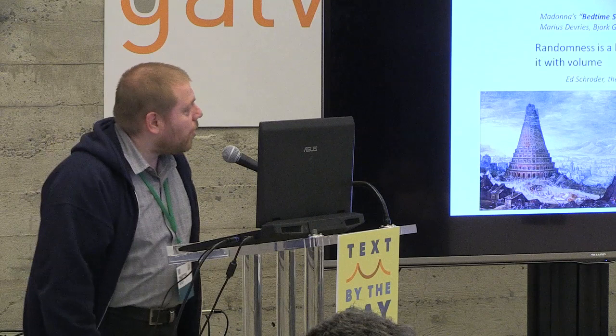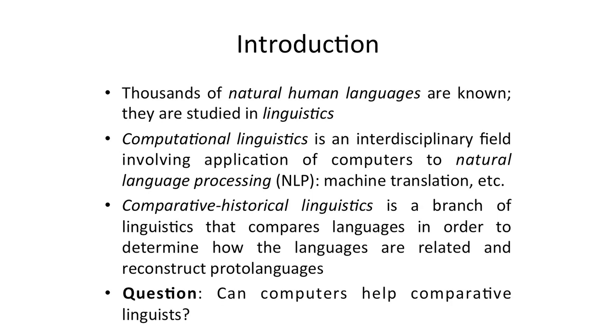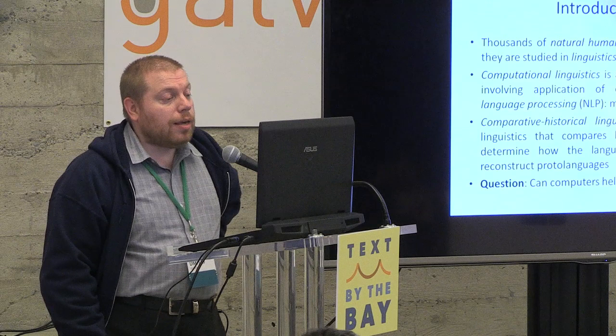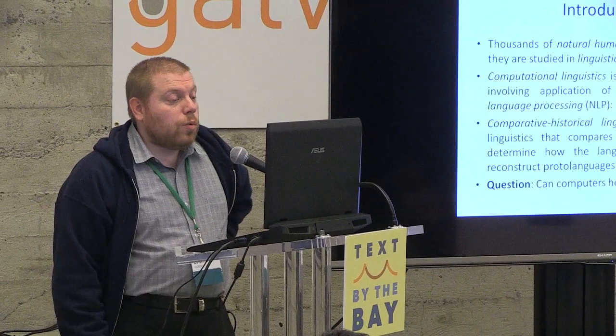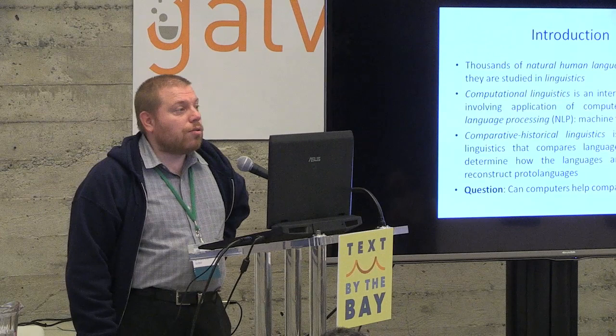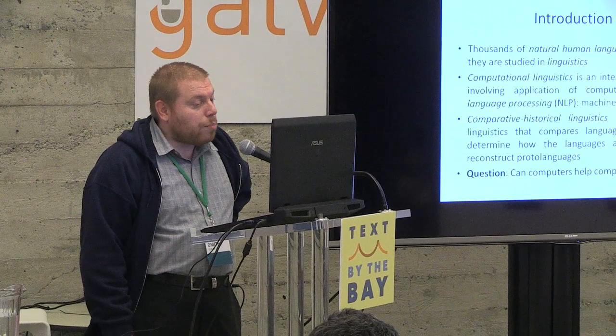What is displayed here is one of the many renditions of the legendary Tower of Babel. This belongs to the subfield within natural language processing known as comparative historical linguistics, where we study how languages are related. There are people within the field who try to reconstruct proto-languages and arrange existing languages in groups of related languages. One question that comes to mind is: can computers help comparative linguists in their work?